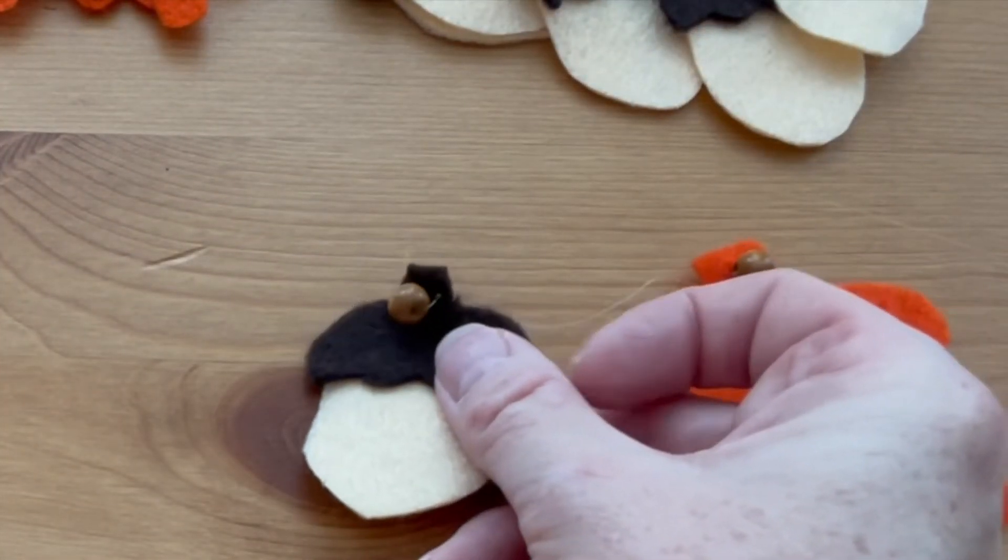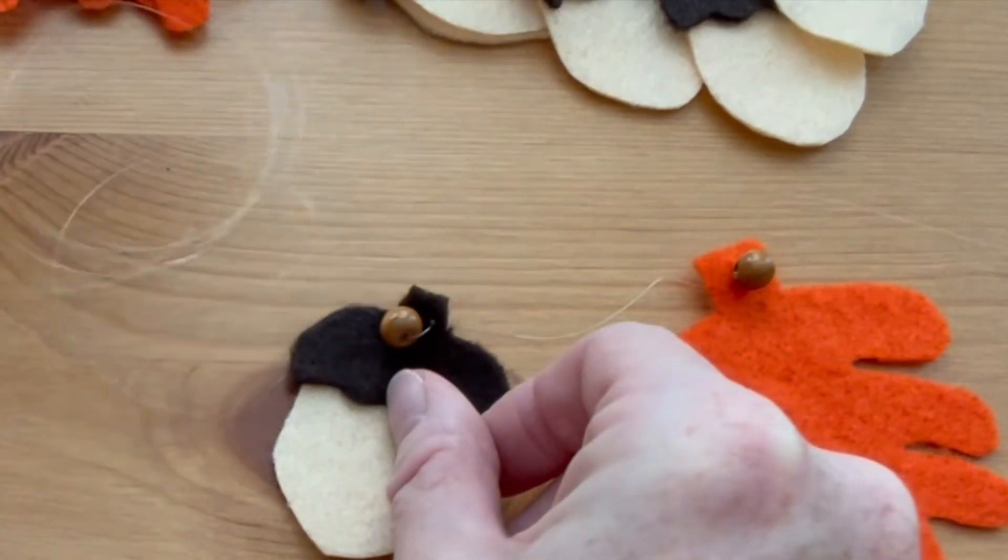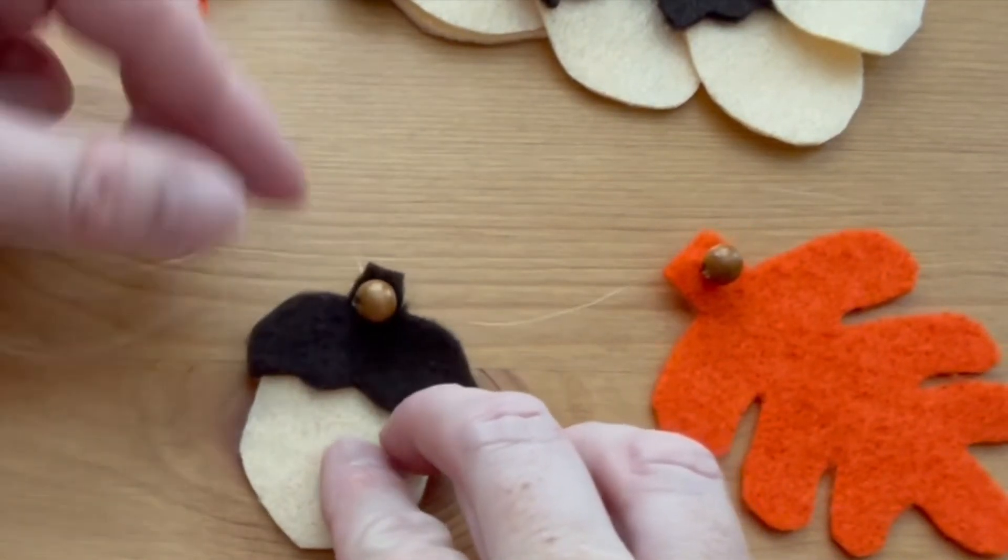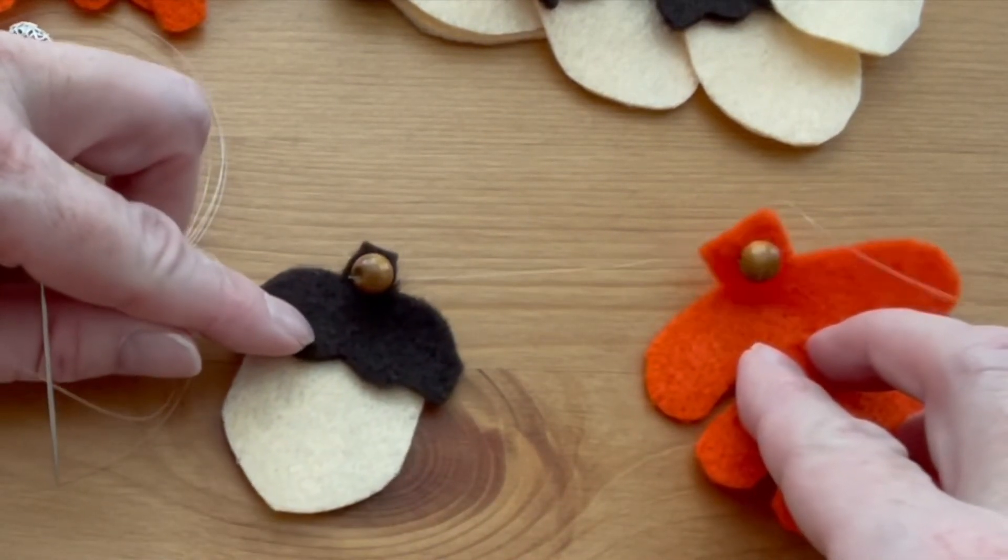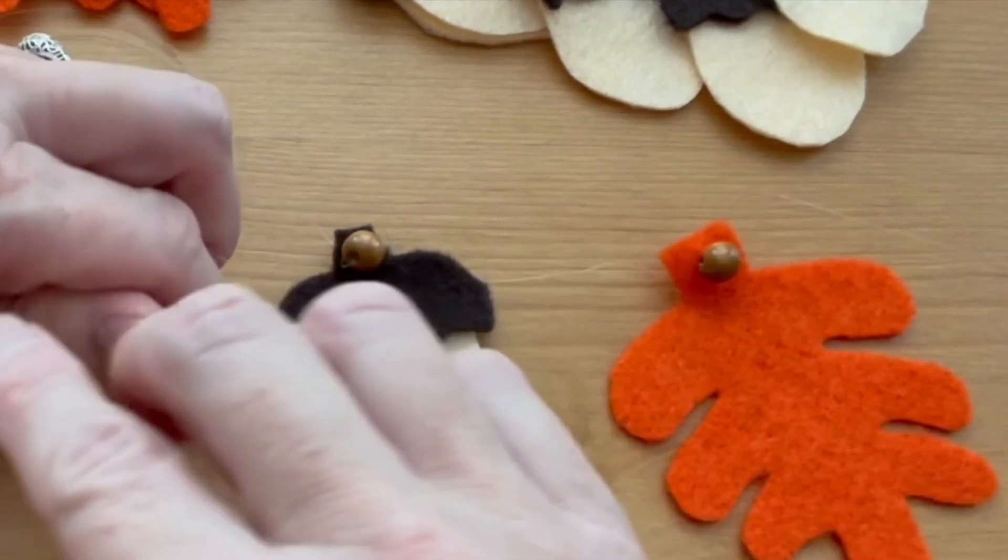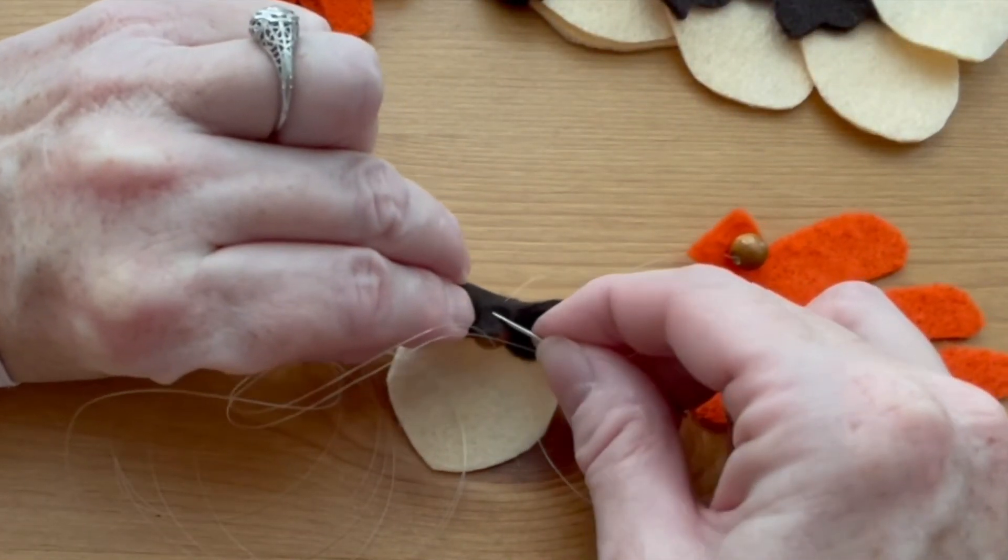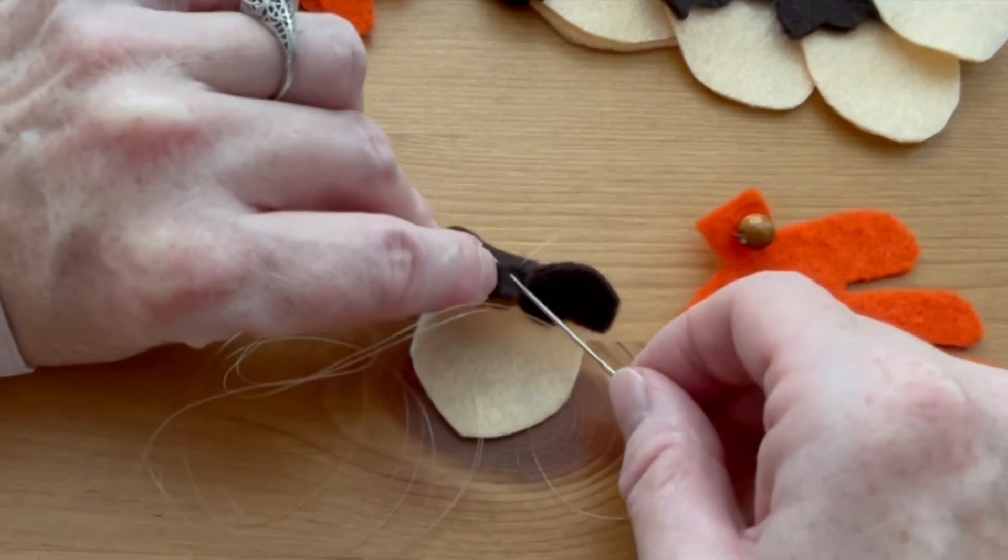Pull it all the way through until it's in the spot where you want it to be. You can space these however you want. I like to do about two and a half to three inches in between. I'm going to turn it over and take that little stitch on the back to hold it in place.